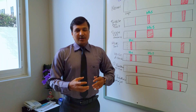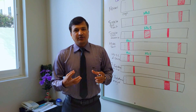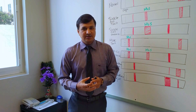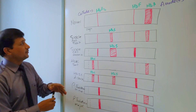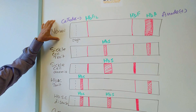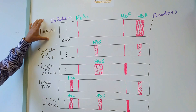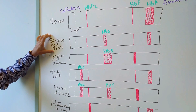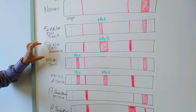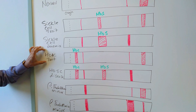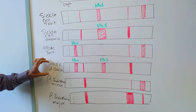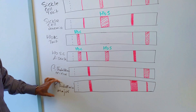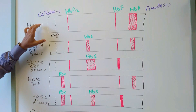Hello everyone. Today I'm going to explain the electrophoresis pattern for different hemoglobinopathies. I have written here the normal electrophoresis pattern for hemoglobin and different disorders: sickle cell trait, sickle cell anemia, hemoglobin AC trait, hemoglobin SC disease, beta thalassemia minor, and beta thalassemia major.